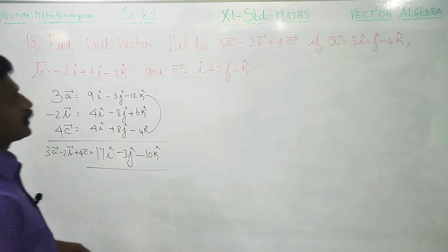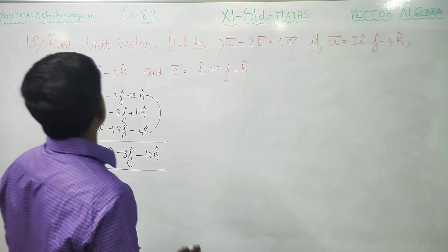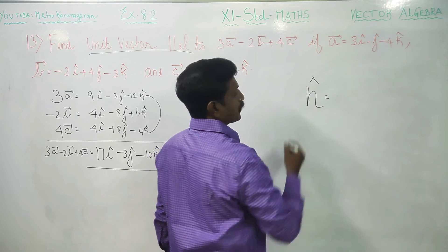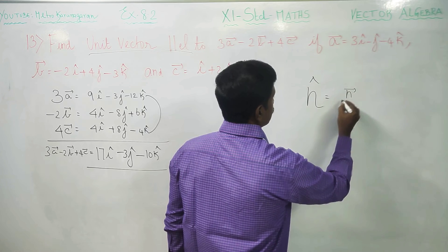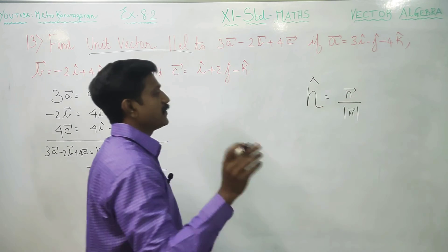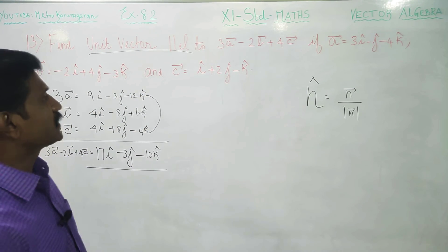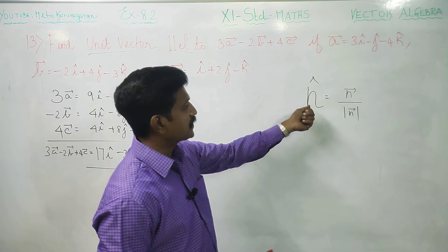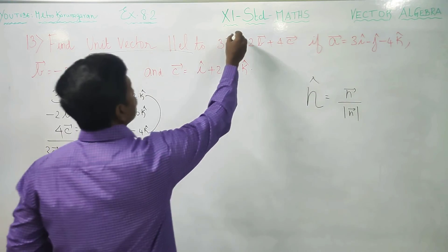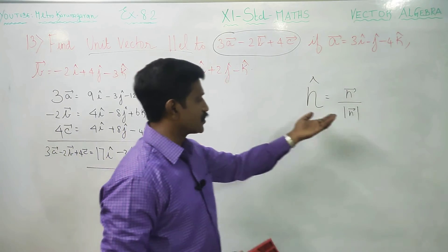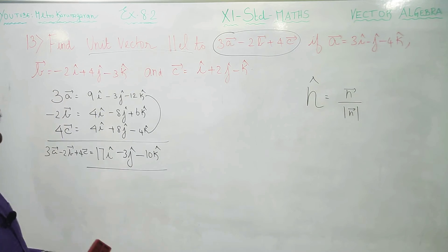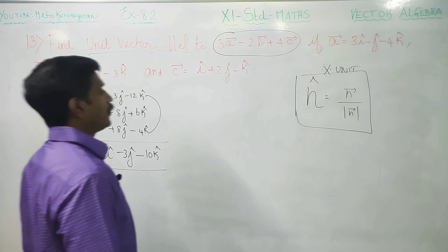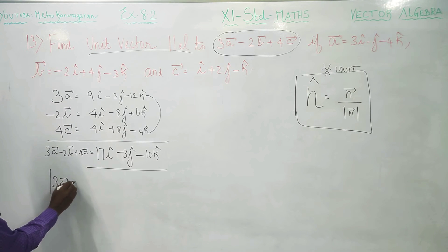You have to find the unit vector parallel to 3a minus 2b plus 4c. Unit vector formula is the vector divided by its modulus along the same direction. Plus or minus means the same direction, unit vector parallel to. This is the formula for unit vector.